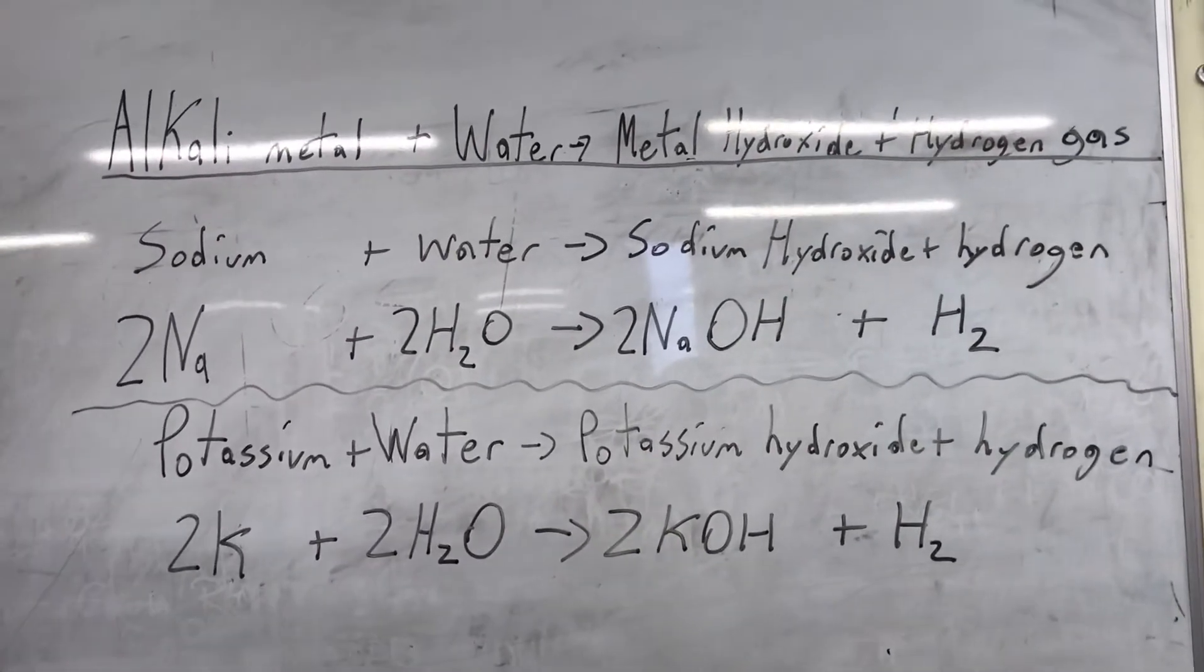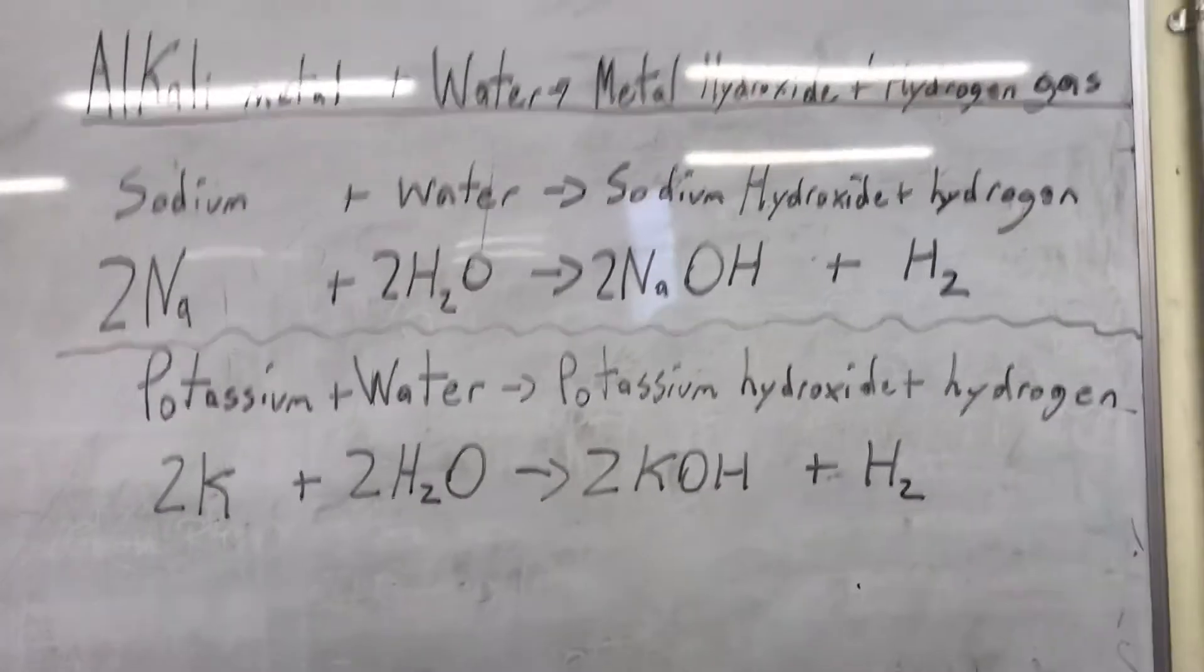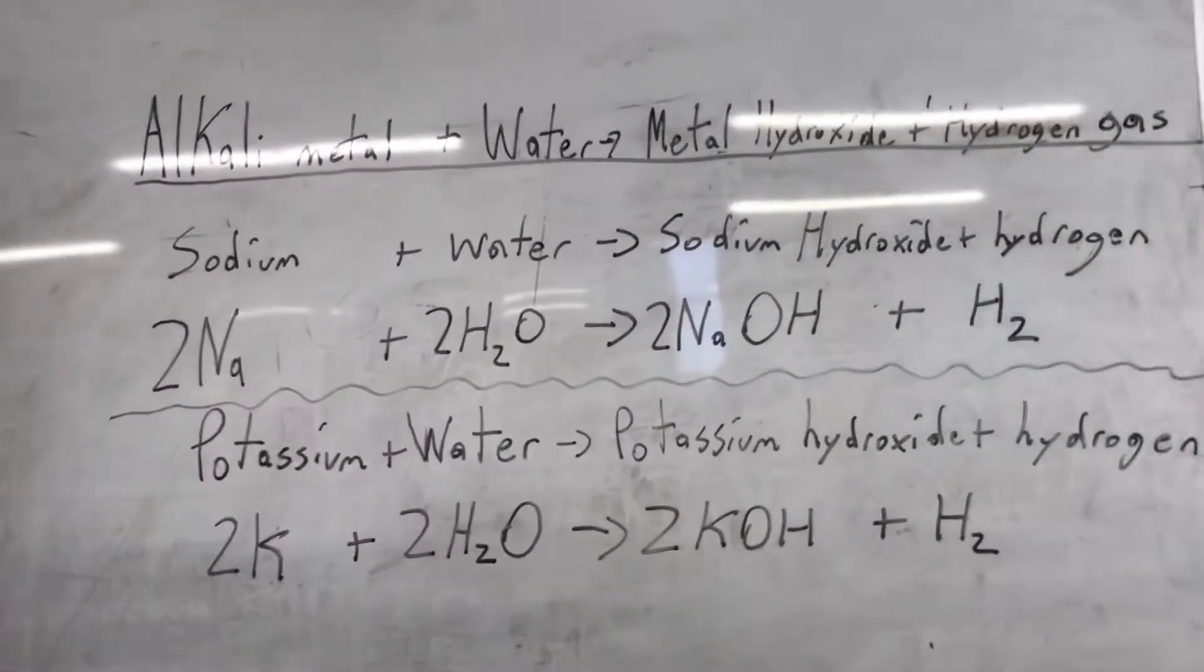When we react alkali metals with water, they always produce a metal hydroxide and hydrogen gas. Now, they are called alkali metals because they make an alkaline solution.